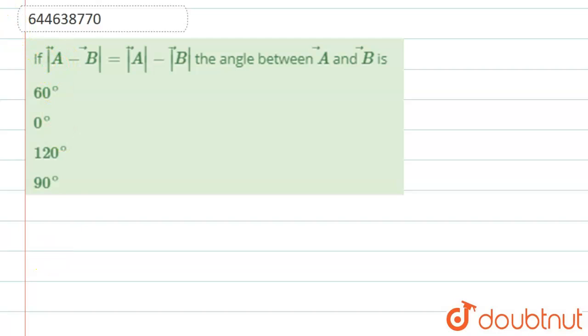The question says that if |A⃗ - B⃗| is equal to |A⃗| minus |B⃗|, then the angle between A and B is... So we need to find the angle between A and B. If we see properly, the formula for this was...